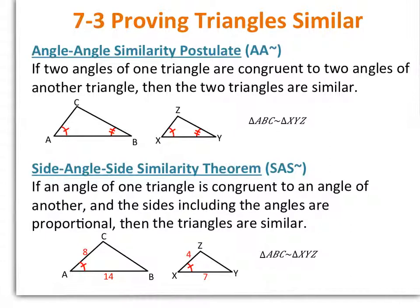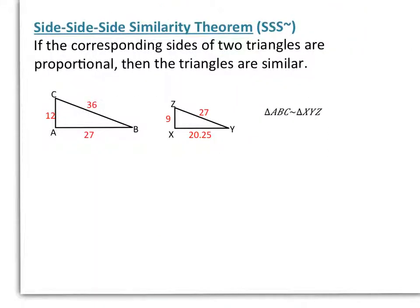The side-angle-side similarity theorem says if an angle of one triangle is congruent to an angle of another, and the sides including the angles are proportional, then the triangles are similar. The side-side-side similarity theorem says if the corresponding sides of two triangles are proportional, then the triangles are similar.